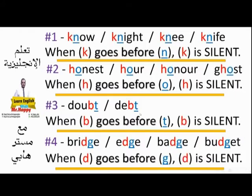Now let's study the 20 rules for silent letters. I'd like to thank my colleague Mr. Ahmad Al-Hakim — he helped me a lot in collecting the information about this lesson. Rule number one: know, night, knee, knife. Don't say 'kno', 'knight', 'knee', 'knife' — say 'no', 'night', 'knee', 'knife'. Why? Because K is silent. Why is K silent? The rule says: when K goes before N, it's silent.